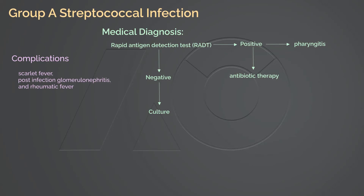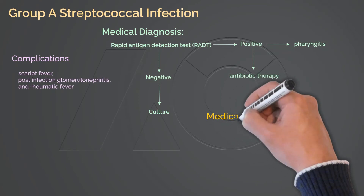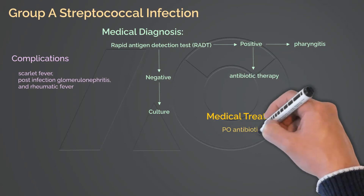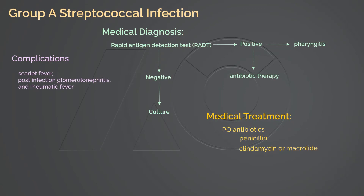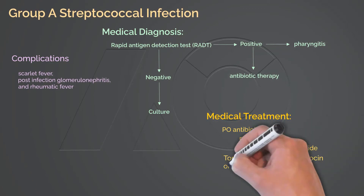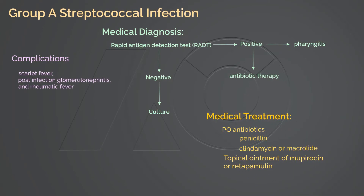Prompt treatment is important because of severe sequelae. Medical treatment includes the following: prompt oral antibiotics with penicillin should be initiated as soon as possible; amoxicillin is commonly prescribed. Should the child be allergic to penicillin, use clindamycin or oral macrolides. Mupirocin cream or retapamulin ointment is applied topically for impetigo in addition to oral antibiotics. Unfortunately, there is no prevention for pharyngitis or impetigo caused by Streptococcus; however, prompt treatment with antibiotics prevents severe post-infection sequelae.